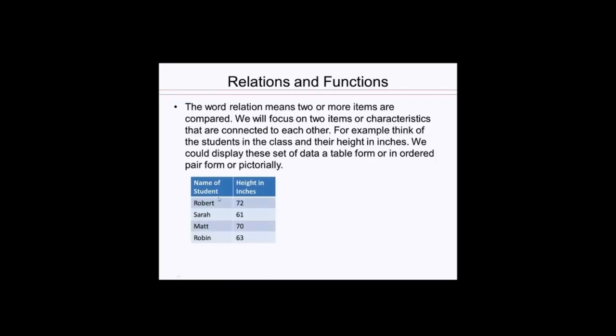So in table form, I'll have names of my students and then height in inches. And so we have an ordered pair here: name, inches, name, inches. Another way to represent this same data would be in set notation. Curly brackets represent the set and ordered pairs. So Robert comma 72 in the parentheses is an ordered pair, saying 72 inches corresponds to Robert's height.